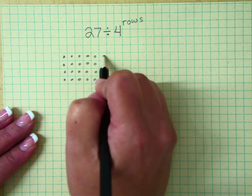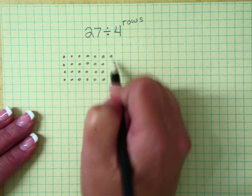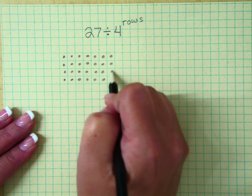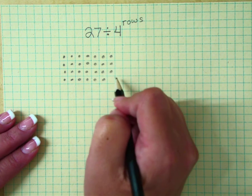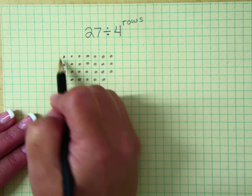20, 21, 22, 23, 24, 25, 26, 27. Then you ask yourself, were you able to build a rectangle?